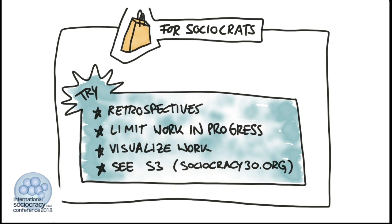On the other hand, if you're in a sociocratic context, we can recommend patterns like retrospectives, where you look at the past and learn from it to improve your processes in the future. Something also valuable is to limit your work in progress, so you're not working on too many things at the same time — you're more focused and productive that way. Something that goes hand-in-hand with that is to visualize your work, so you can see what you're doing right now and what needs to be done next. This enables you to prioritize your next tasks better and also contributes to transparency, helping others plan their own tasks.